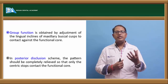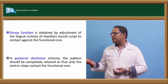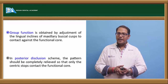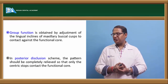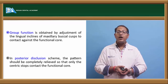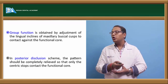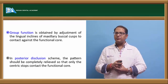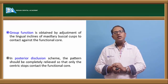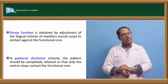The patient can be either canine guided or have group function. Group function is obtained by adjustment of the lingual inclines of the maxillary buccal cusp to contact against the functional core. For group function, the lingual inclines of the maxillary buccal cusp — being the functional cusp — are taken to contact against the functional core. In a posterior disocclusion scheme, according to Christensen's phenomenon there is 5 degrees; when there is disocclusion, the pattern should be completely relieved from the centric stop contact of the functional core.